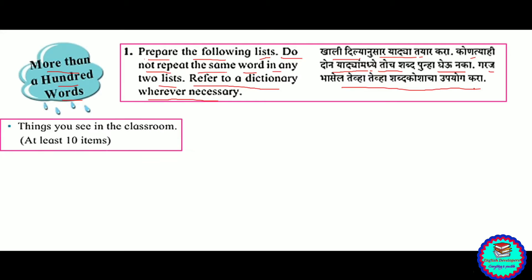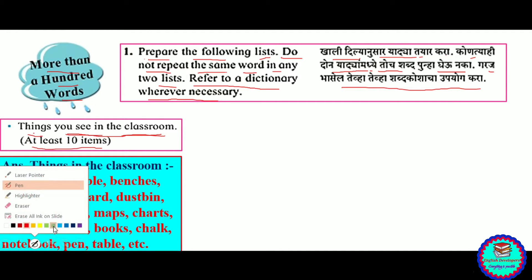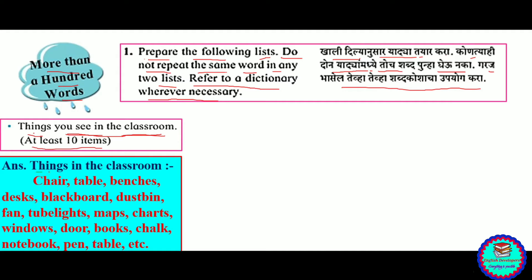Now, things you see in the classroom — list at least the items. Things you see in the classroom. In the classroom, with the items: chair, table, benches, blackboard, dustbin, fan...